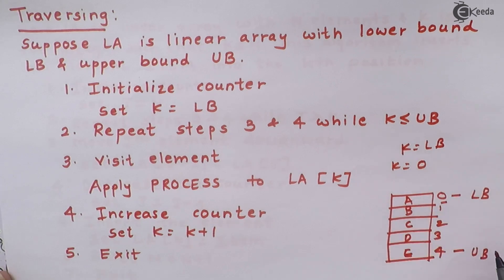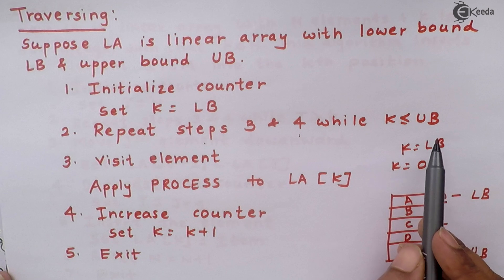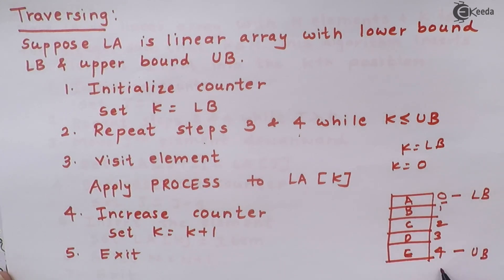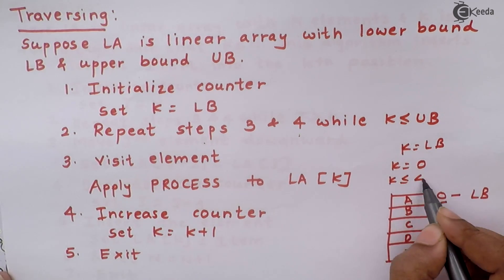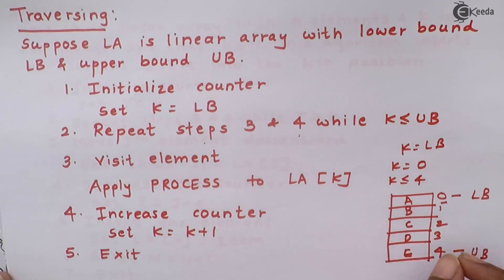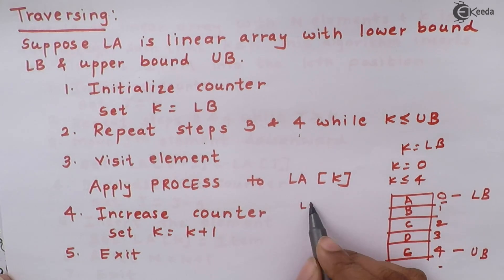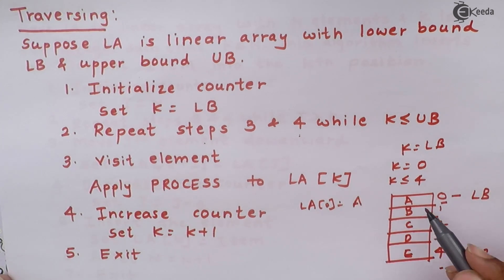Now repeat steps 3 and 4 while my k is less than equal to upper bound. What is upper bound here? My 4 is upper bound. So I will be repeating these steps till my k is less than equal to 4. Visit element apply process to LA of k. I will be visiting the element LA of k. Now what will be LA of k? The k's value is 0. So LA of 0 is going to be your a. I will be applying process onto a and then I will increment my counter. So my counter will be k is equal to k plus 1.